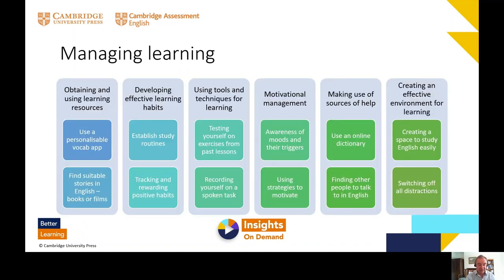The second area of learning behaviours is managing your learning, and we talk about six areas here. First, obtaining and using learning resources — for example, using a personalisable vocabulary app or finding suitable stories, books or films in English. Second, developing effective learning habits by establishing learning routines and tracking and rewarding positive habits — when you do manage to spend that 30 minutes on vocabulary, reward yourself. Third, using tools and techniques for learning — one well-known effective technique is testing yourself on exercises from past lessons, or recording yourself on a spoken task and playing it back.